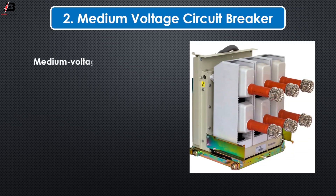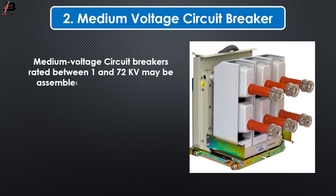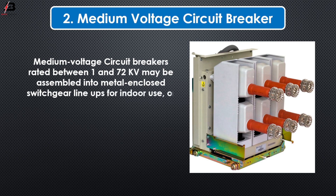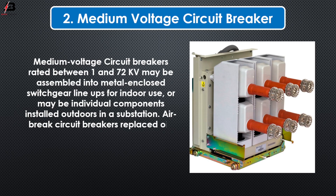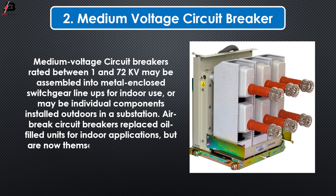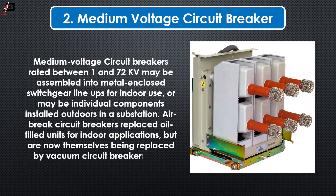Medium voltage circuit breakers, rated between 1 and 70 kilovolts, may be assembled into metal-enclosed switchgear lineups for indoor use, or may be individual components installed outdoors in a substation. Air circuit breakers replaced oil-filled units for indoor applications but are now themselves being replaced by vacuum circuit breakers up to about 40.5 kilovolts.